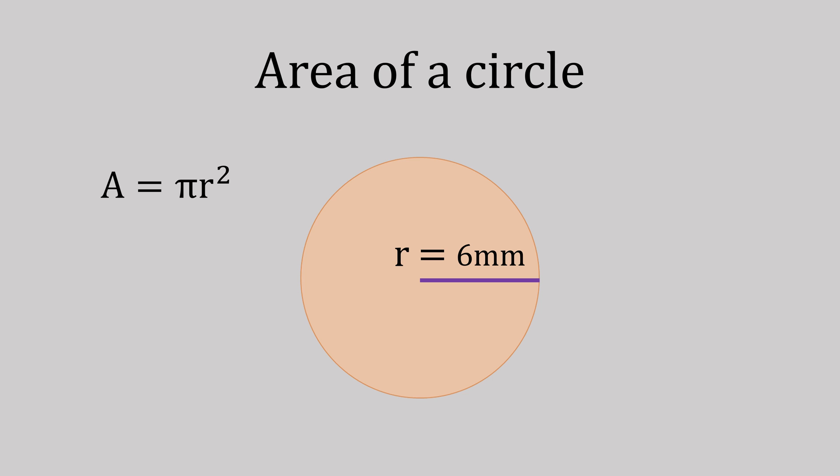That's 6 times 6, giving us 36. We multiply this number by pi, which gives us this lovely long number. Then we round that to one decimal place, giving us 113.1 millimeters squared. Don't forget to square the units since it's area.